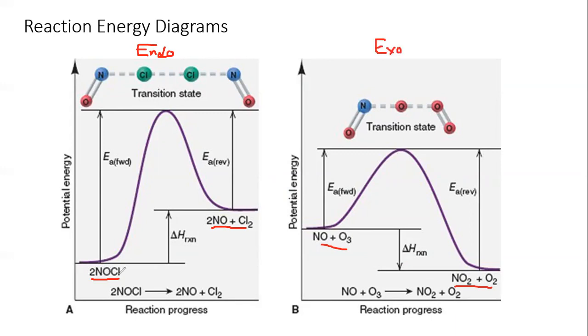So here with NOCl, you see in the transition state, the nitrogen-chlorine bond starts to elongate, the chlorine-chlorine bond starts to form, and then when you form the products, you form a chlorine-chlorine bond, and then you have two NO radicals.